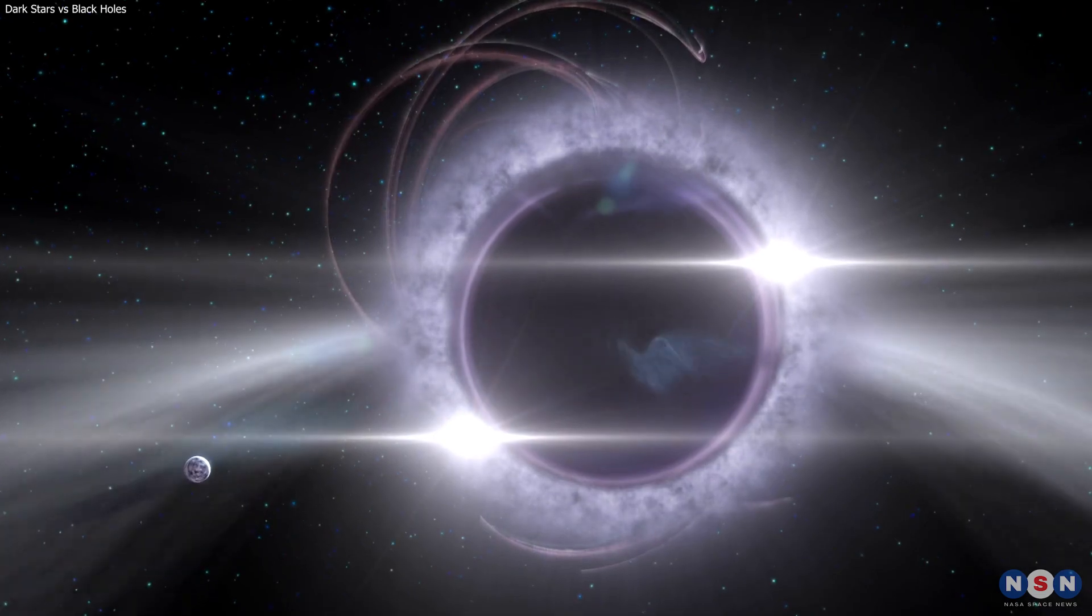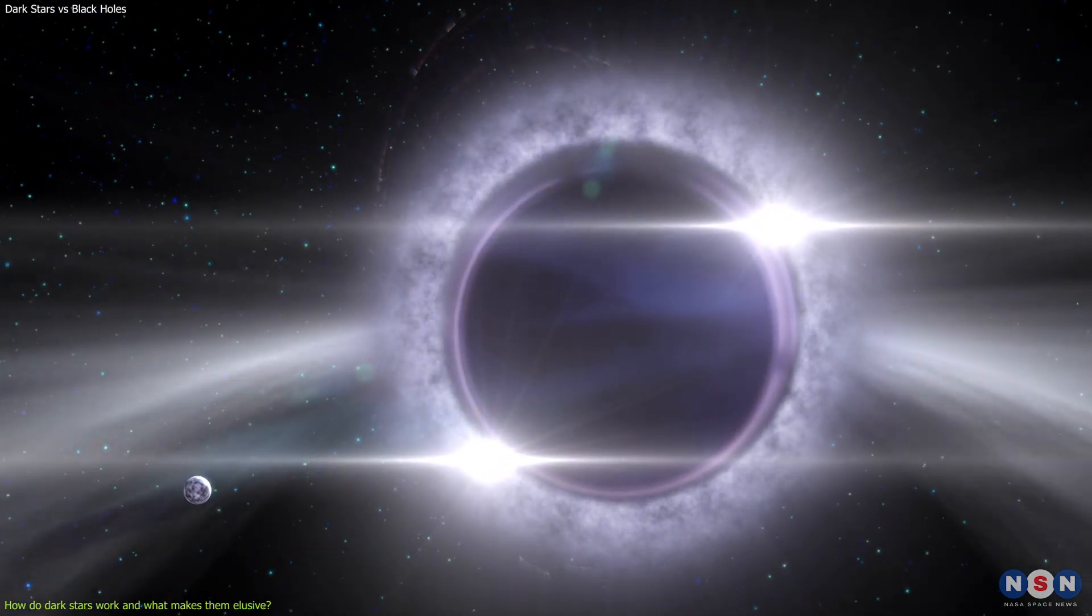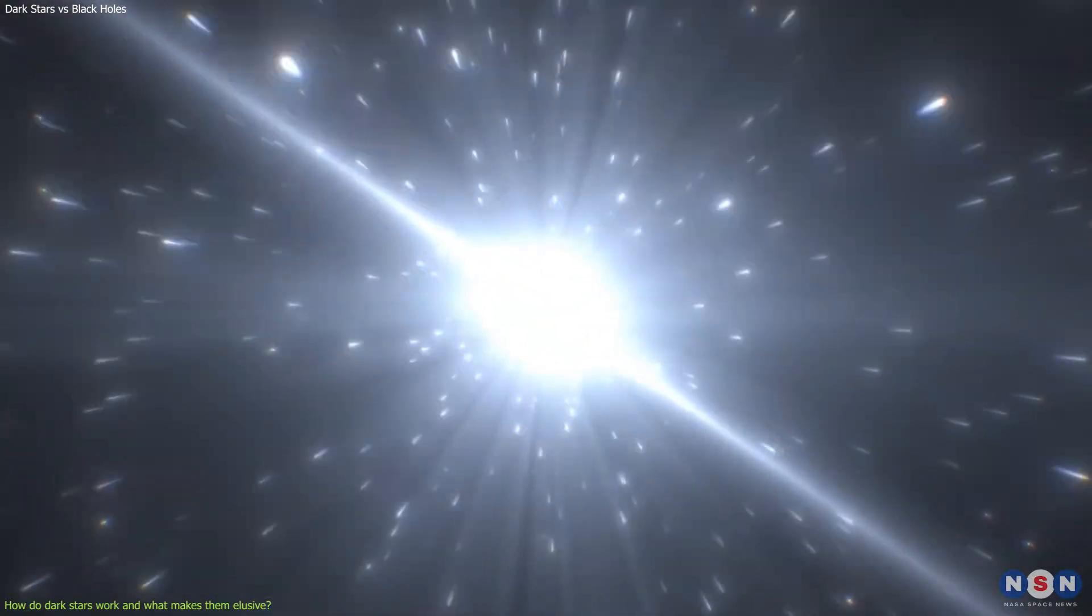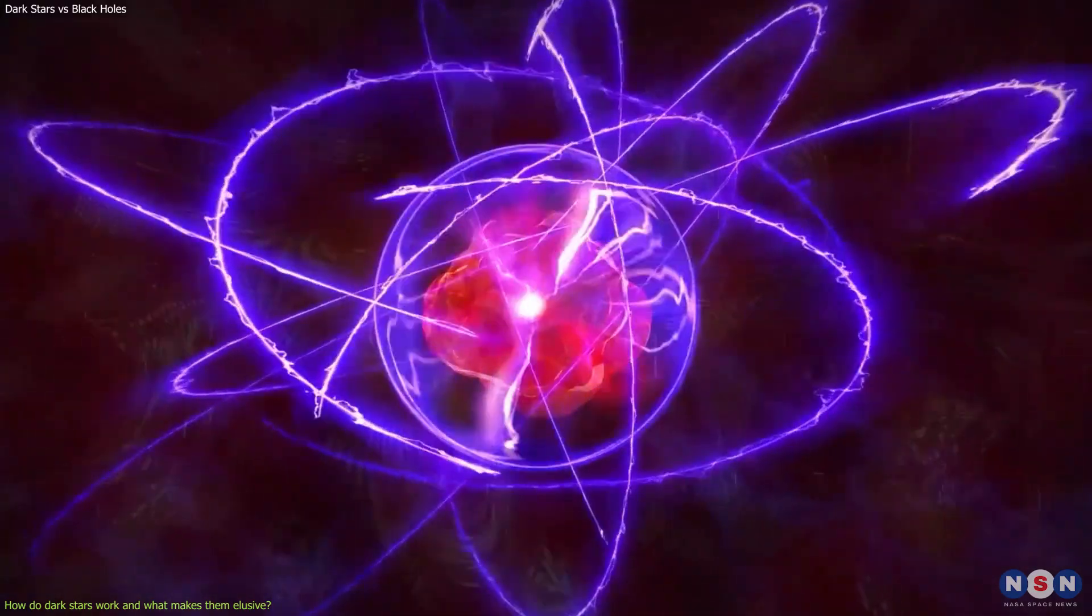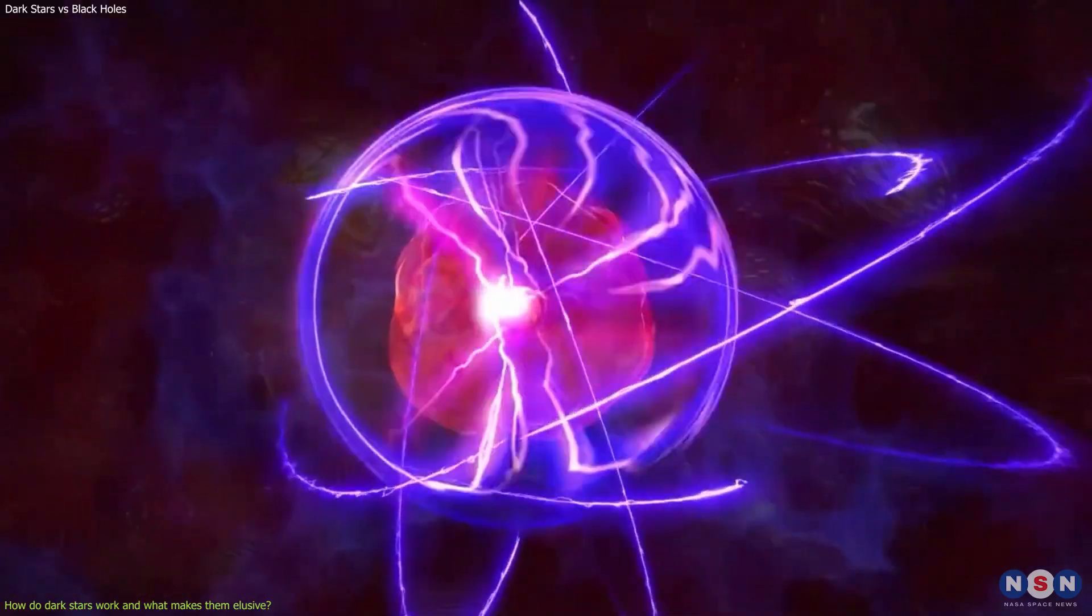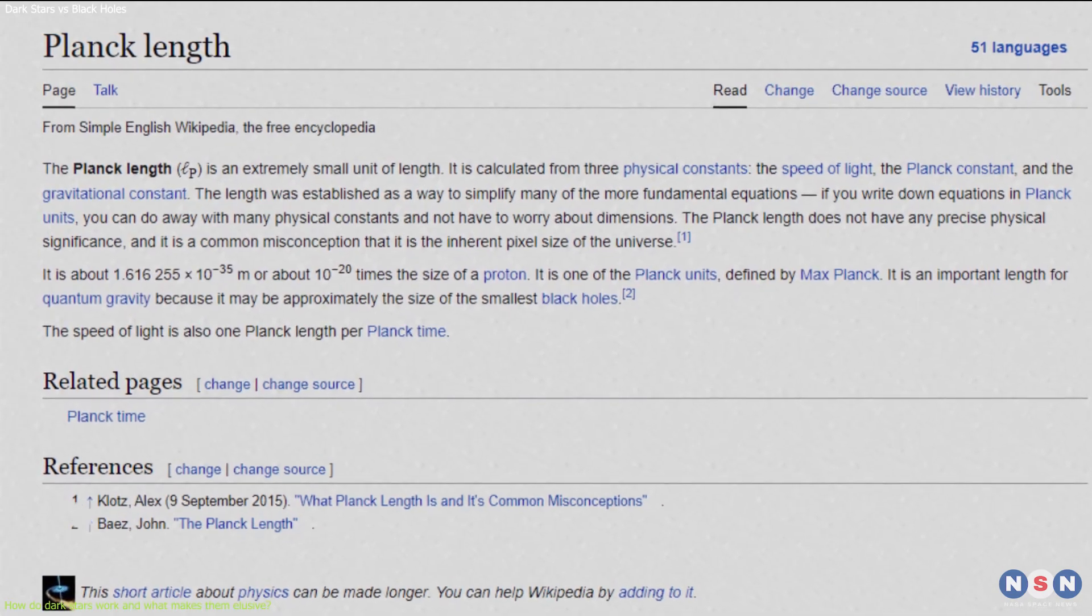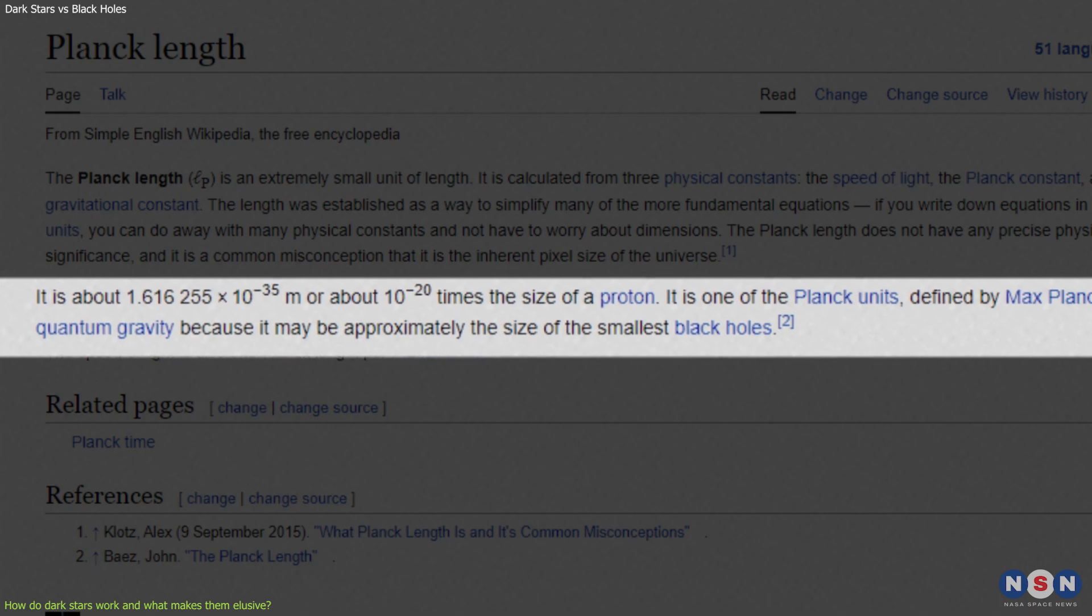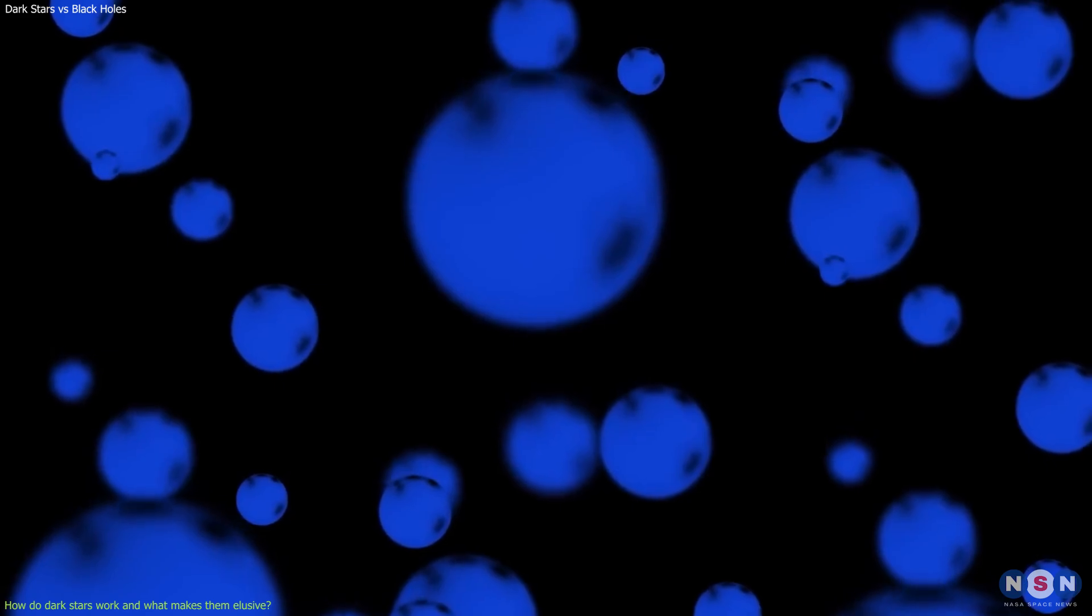So now we know that dark stars are hypothetical objects that have a very dense core of matter that is compressed to the smallest possible scale. This core is called a Planck core. A Planck core is where quantum effects dominate over gravity, and we have some idea what happens there. It is named after the Planck length, which is the smallest possible length that can be measured in physics. The Planck length is about 10 to the power of minus 35 meters, which is much smaller than an atom or even a proton.